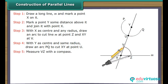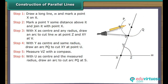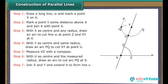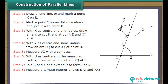Measure VZ with a compass. With U as center and the measured radius, draw an arc to cut arc PQ at S. Join S and Y and extend it to form line N. Measure alternate interior angles SYX and YXZ. Angle SYX is equal to angle YXZ. Therefore, N is parallel to M.